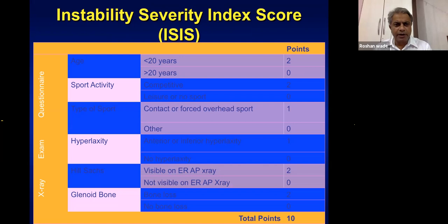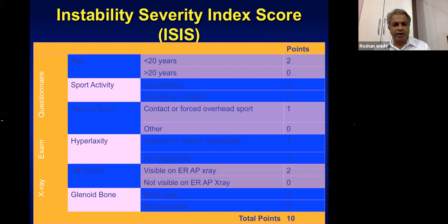The Instability Severity Index (ISIS) score was published by Pascal Boileau from France, based on 20 years of study. It predicts outcome but is somewhat non-objective — quantifying hyperlaxity and Hill-Sachs visibility is difficult, and patients' sports activity levels can change. As a guideline: ISIS score above 6 warrants a bony procedure, 3-6 an arthroscopic procedure with assessment, and below 3 an arthroscopic procedure is indicated.